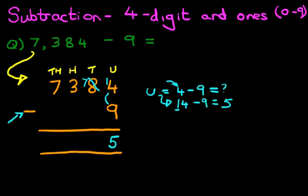We're now going to do the tens column. We no longer have 8. The number 8 has been changed to number 7. So it's 7 minus 0. That remains the same. It is 7.